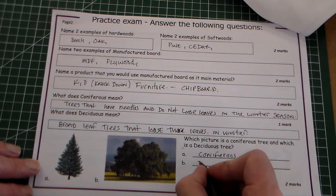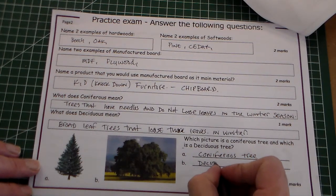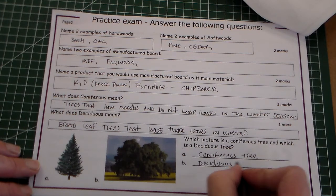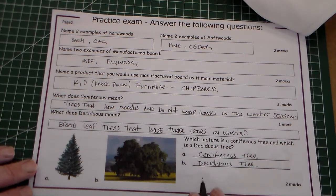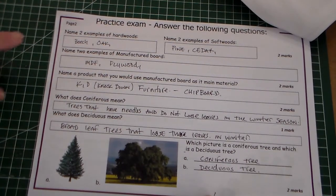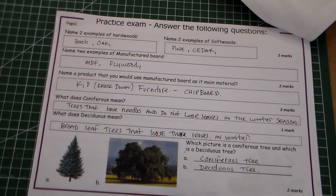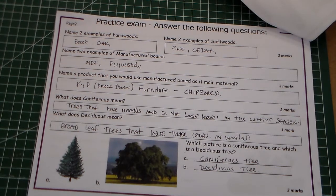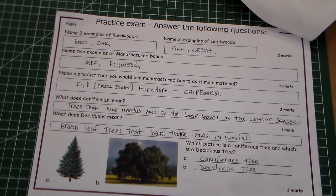And B is the deciduous tree. So there is question two of our exam walkthrough, and that is hardwoods and softwoods. Thanks for watching.